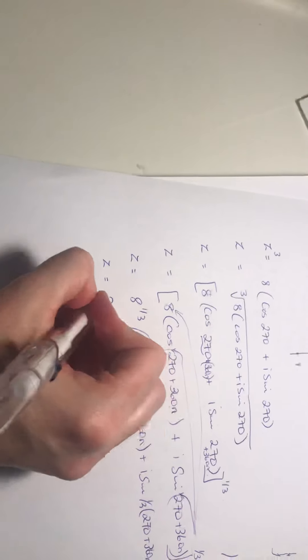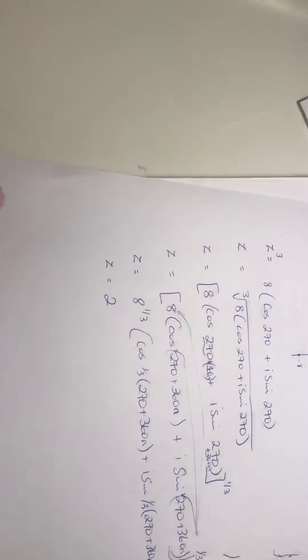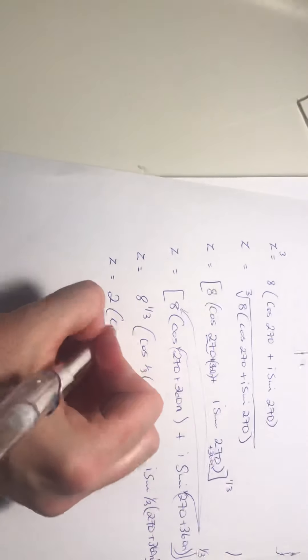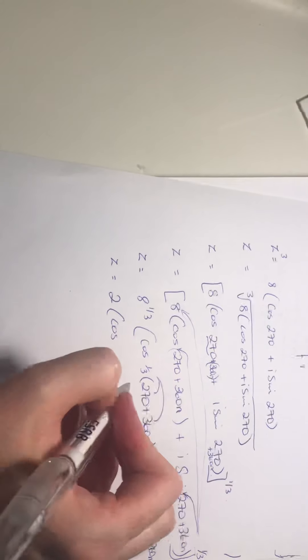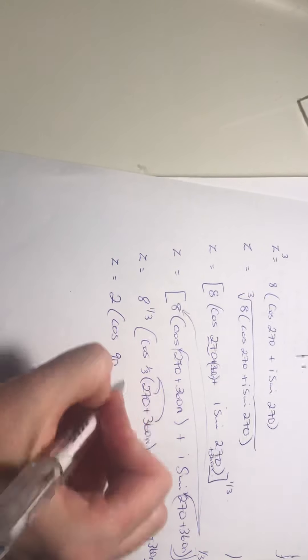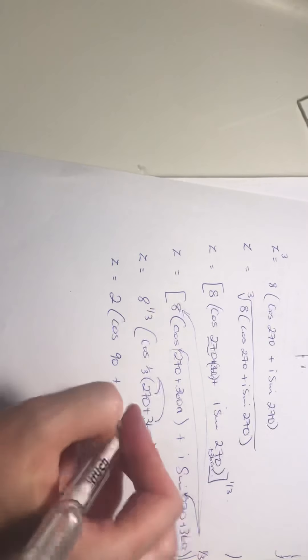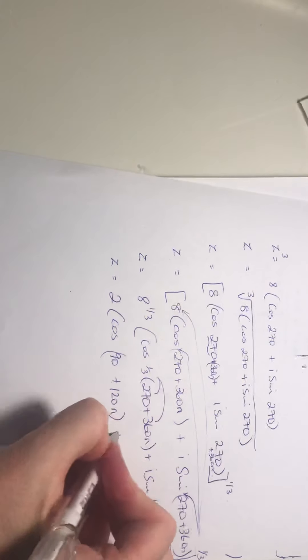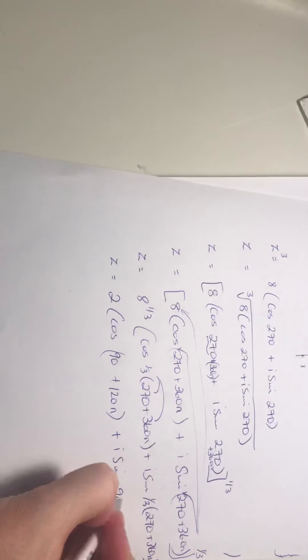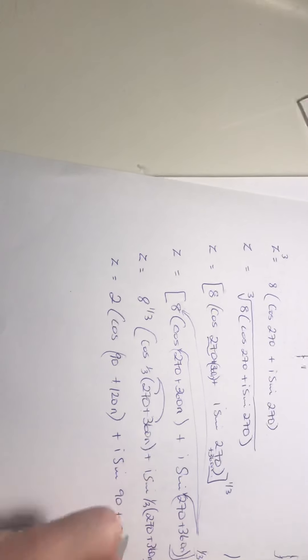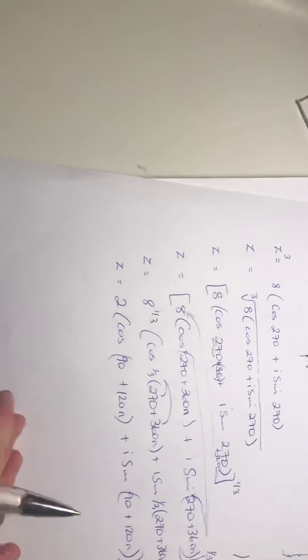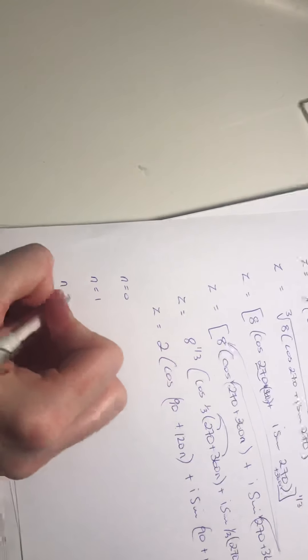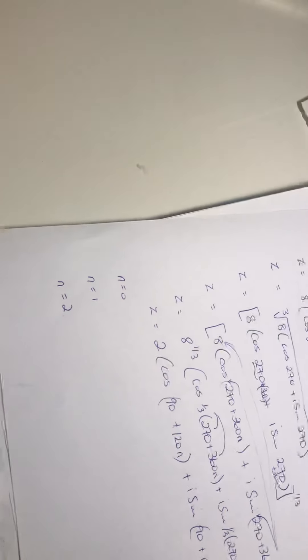And let's clean this up. Z is equal to cubed root of 8 is 2. Let's multiply this out. So we have cos of a third times 270, that's 90 plus 120n. So when I get as far as here, I now let maybe n equal to 0, then n equal to 1, n equal to 2. So I can get my three solutions.